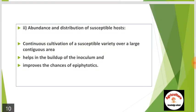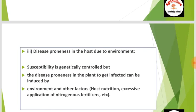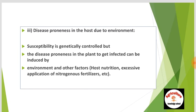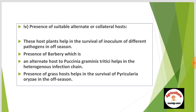Second is abundance and distribution of susceptible host: continuous cultivation of a susceptible variety over a large contiguous area helps in the building of the inoculum and improves the chances of epiphytotic. Third is disease proneness in the host due to environment: susceptibility is genetically controlled, but disease proneness in the plant to get infected can be induced by environment and other factors like host nutrition, excessive application of nitrogenous fertilizers, etc.